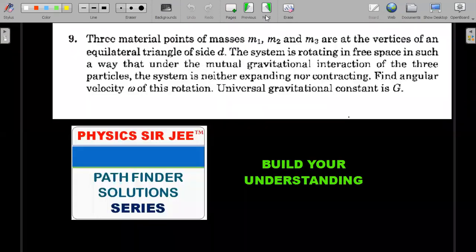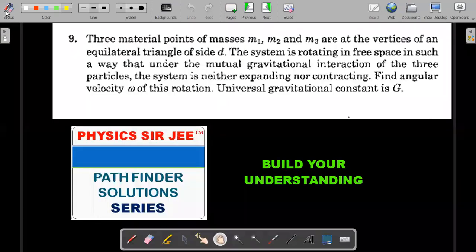Here it is. Three material points of masses M1, M2 and M3 are at vertices of an equilateral triangle of side D and the system is rotating in free space such that the mutual gravitational interaction of the three particles make sure that the system is neither expanding nor contracting.